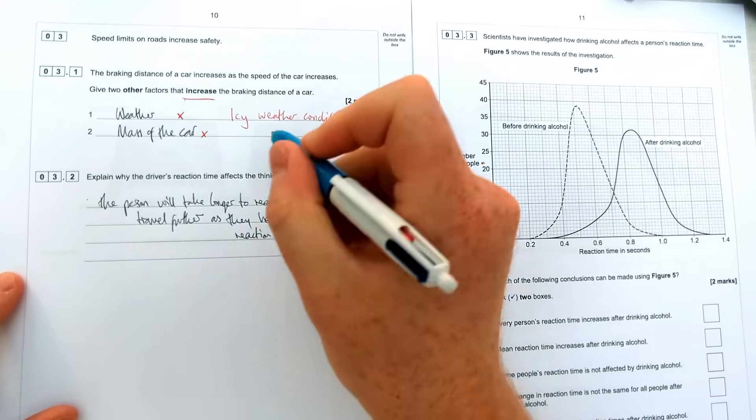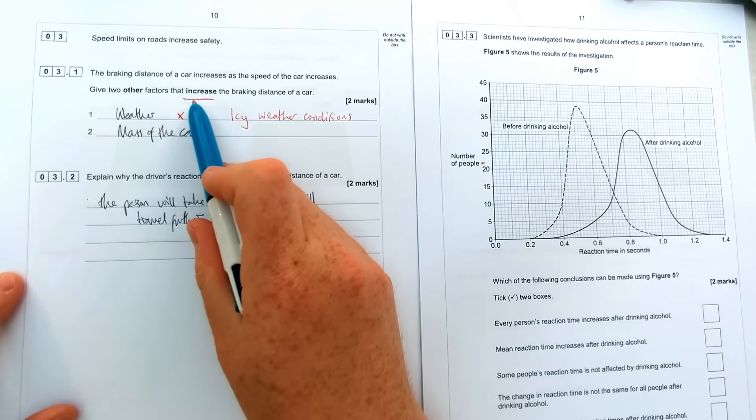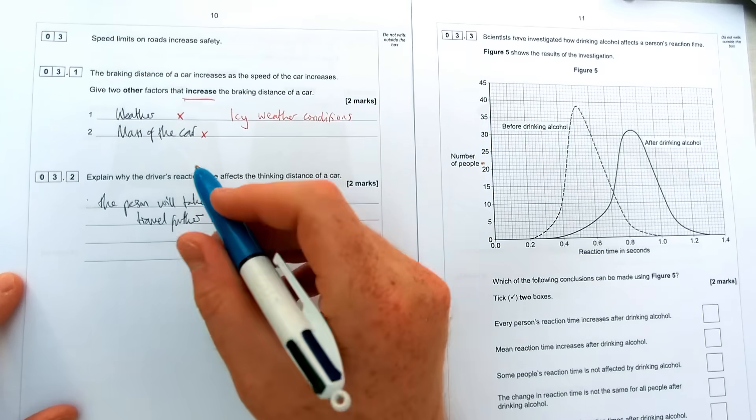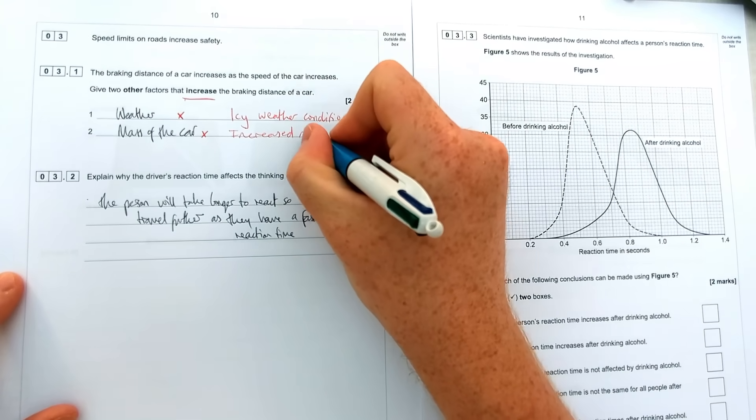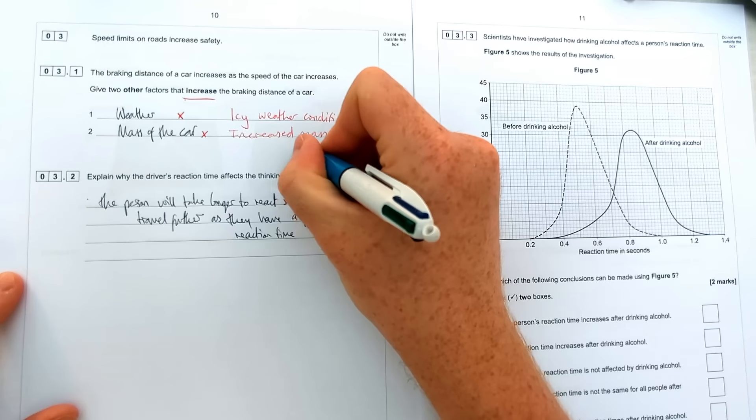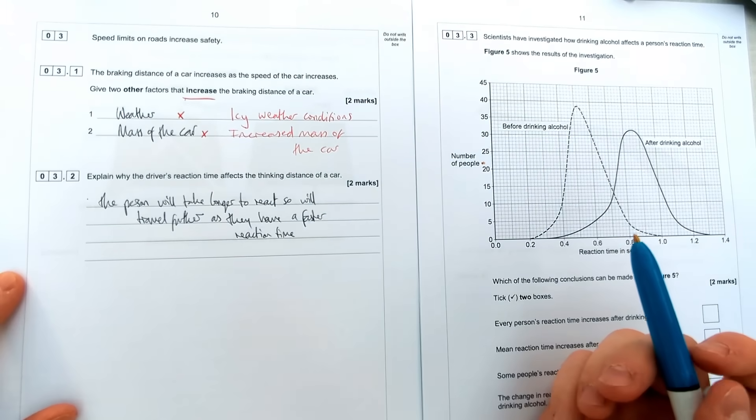Next one is the mass of the car and again it's the right idea, it's a factor, but as we increase the braking distance that would happen with a heavier car. So you'd say an increased mass of the car which would be the thing that actually makes the braking distance further in this case.